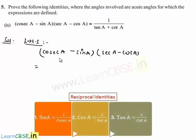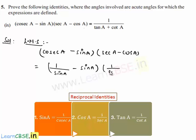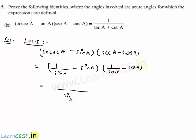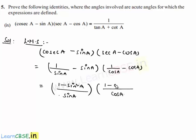Cosec a can be written as 1/sin a, and sec a can be written as 1/cos a. Taking sin a as common in the first term gives (1 - sin²a)/sin a, and taking cos a as common in the second term gives (1 - cos²a)/cos a.